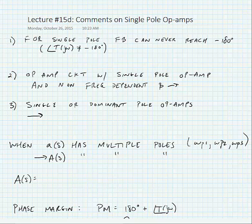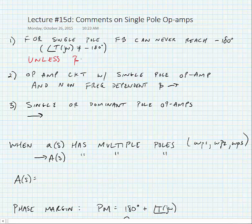We're going to make some comments on single pole op amps and then look at a couple of terms — phase margin and gain margin — that determine the stability for operational amplifiers that have more than one pole. For a single pole op amp, the feedback can never reach minus 180 degrees, as we saw in the last slide. This means that the op amp is always stable unless beta has frequency dependence.